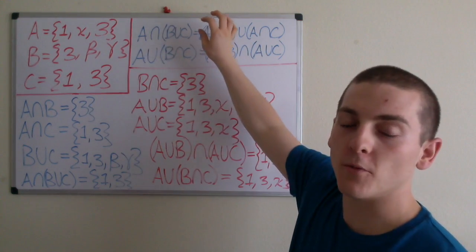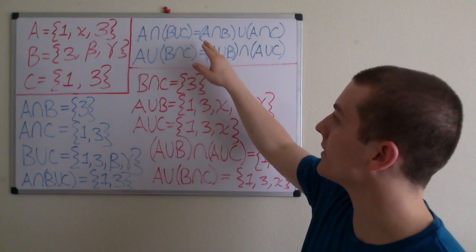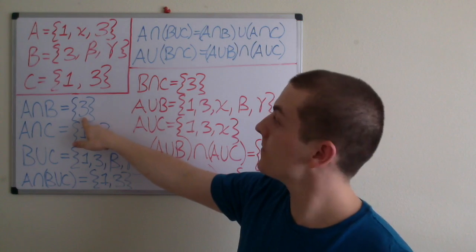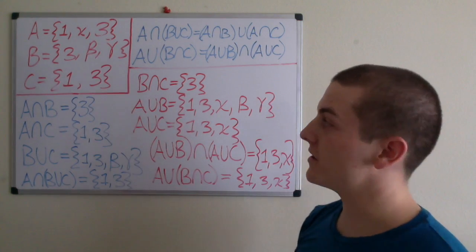So if we decompose this equation and look at, let's start with A intersection B, then that equals singleton 3, based off from these predetermined sets.